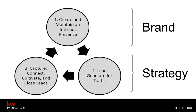Our existing model is: first, create and maintain an Internet presence; lead generate for traffic; and then capture, connect, cultivate, and close those leads. We'll go through each part of this model throughout the next six weeks. We're dividing it into two categories — focusing one on brand, creating and maintaining your Internet presence; and the second half of the series will focus on your strategy, which is lead generating for traffic, and capturing, connecting, cultivating, and closing those leads.